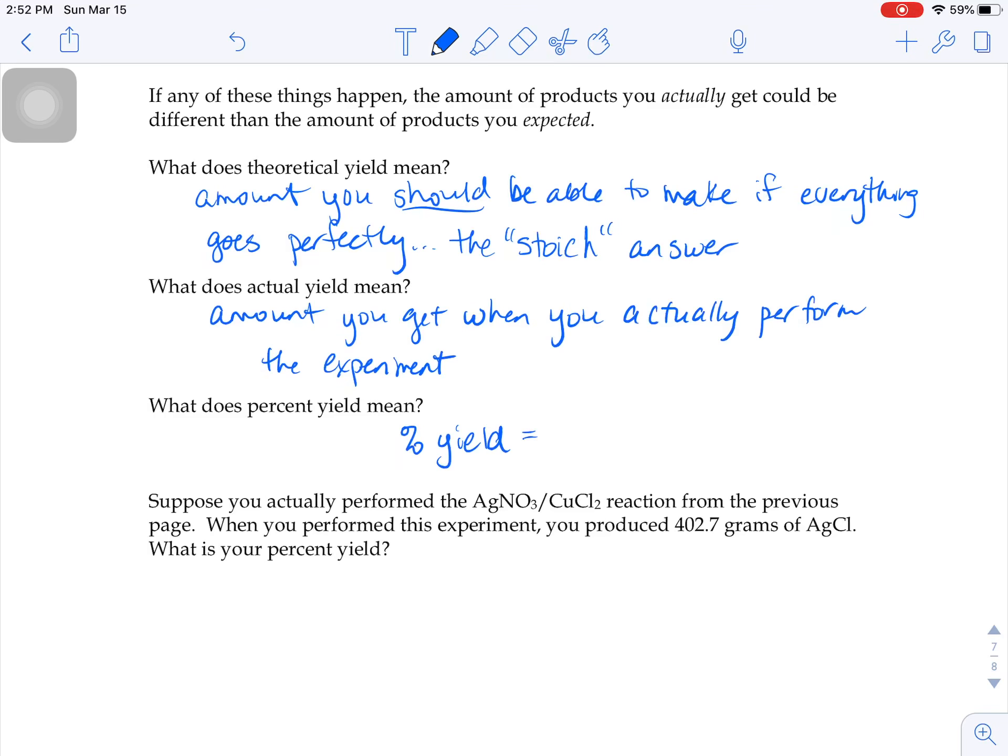Percent yield. The equation looks a lot like percent error, but it's not a hundred percent the same. You take what you actually get divided by what you theoretically should get and multiply it by a hundred.